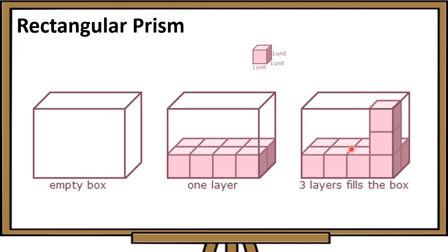To find the volume of this rectangular prism, bibilangin natin yung laman or yung cubes sa loob. The first layer is 8, the second layer is 8, at itong third layer ay 8, so mapupuno na itong ating box. Ilan lahat ang cubes na nasa loob? Yun yung ating volume.